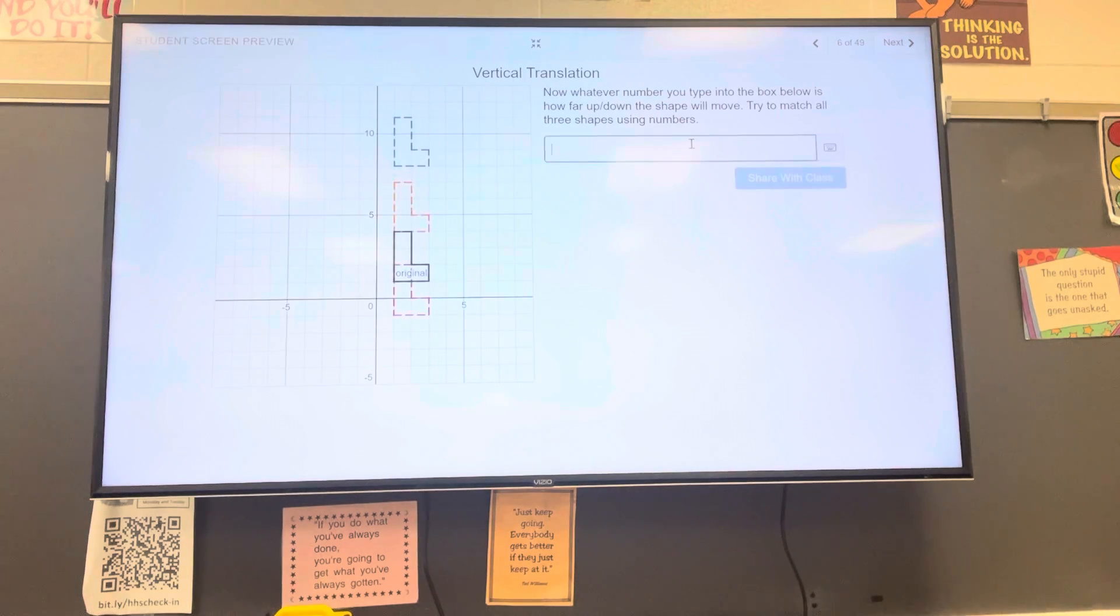Slide six. Now whatever number you type in the box below is how far up or down the shape will move. So if I take my original and move it up one, two, three, I move it up to the yellow figure. If I want to move it down to the red, that's one, two, minus two.